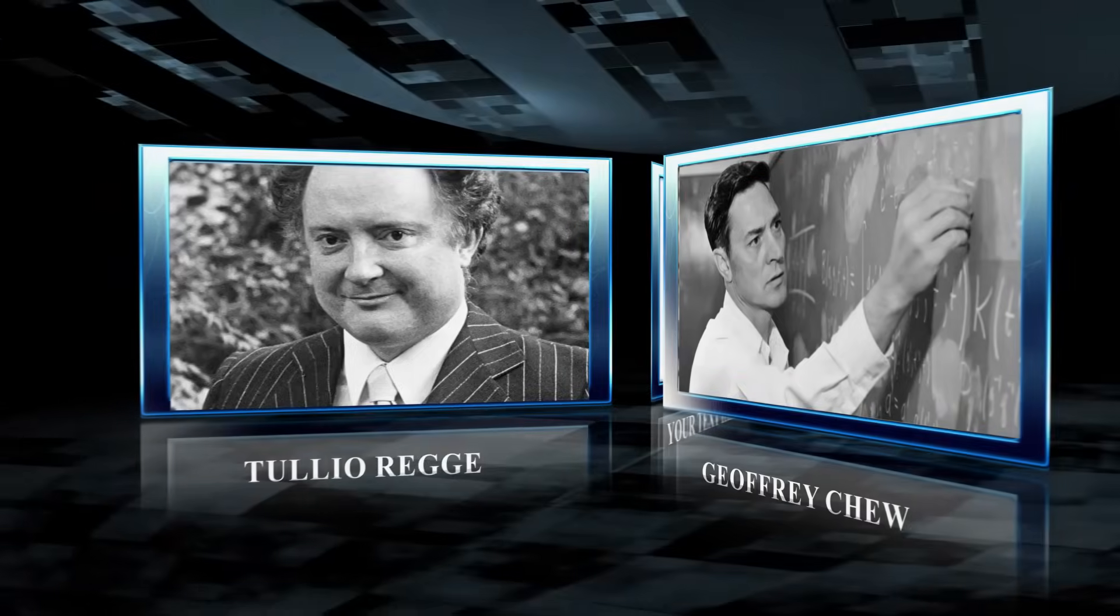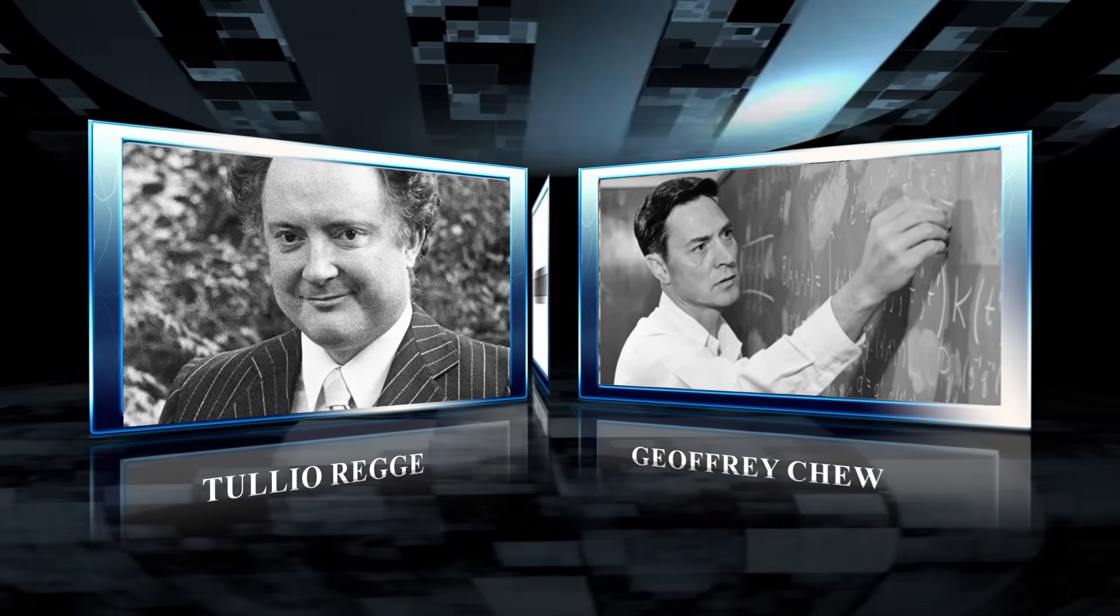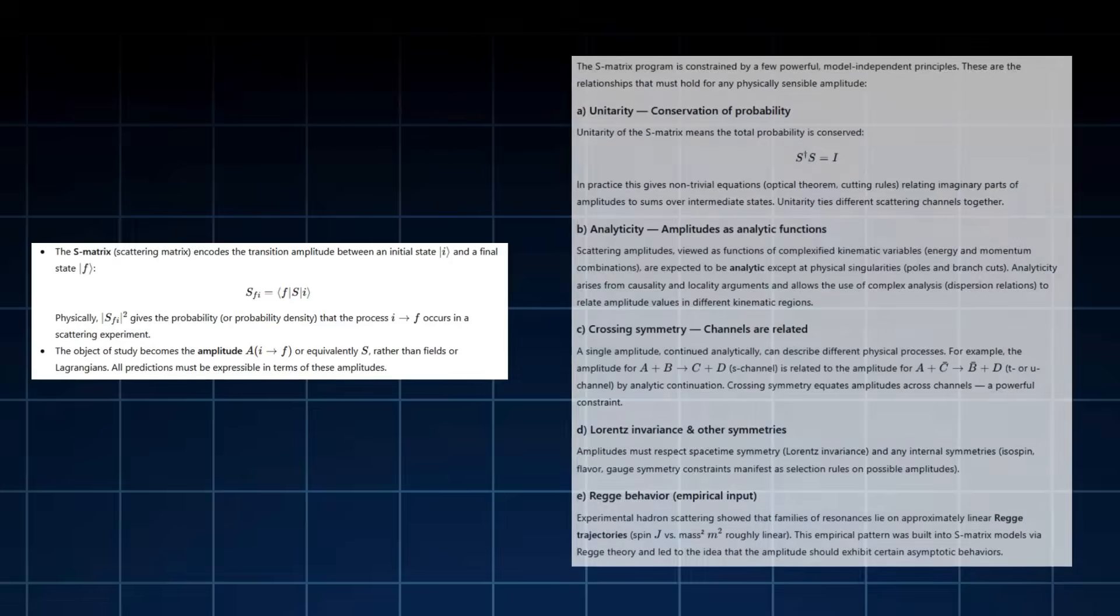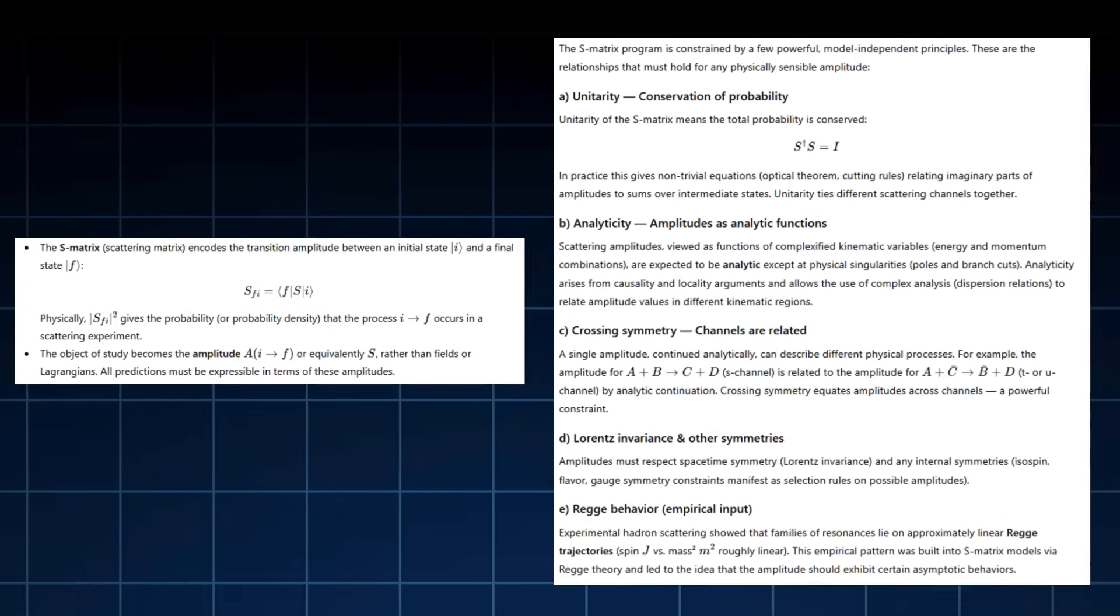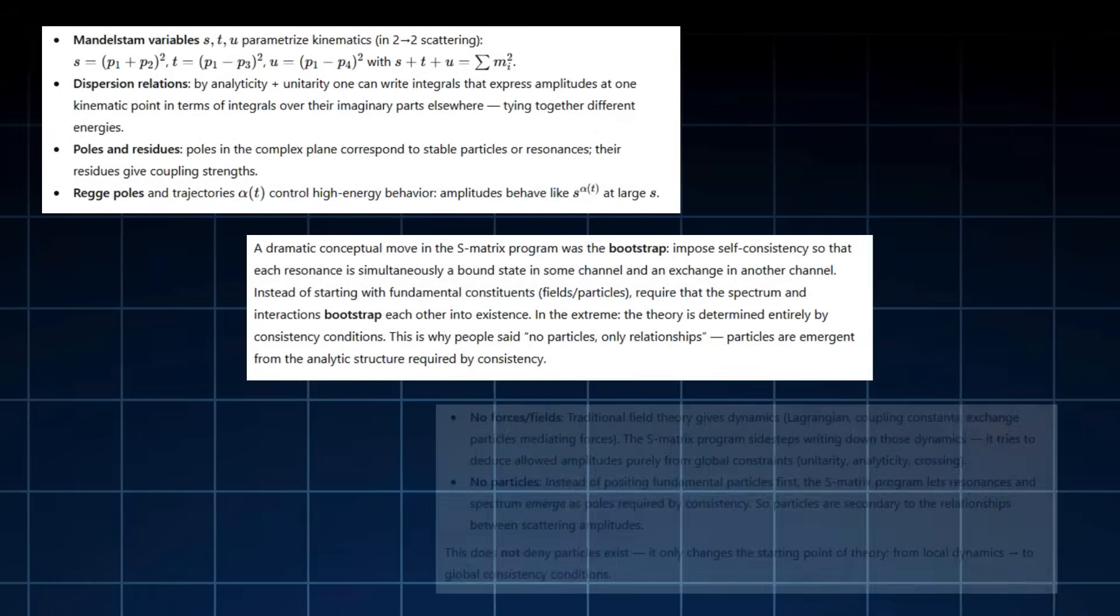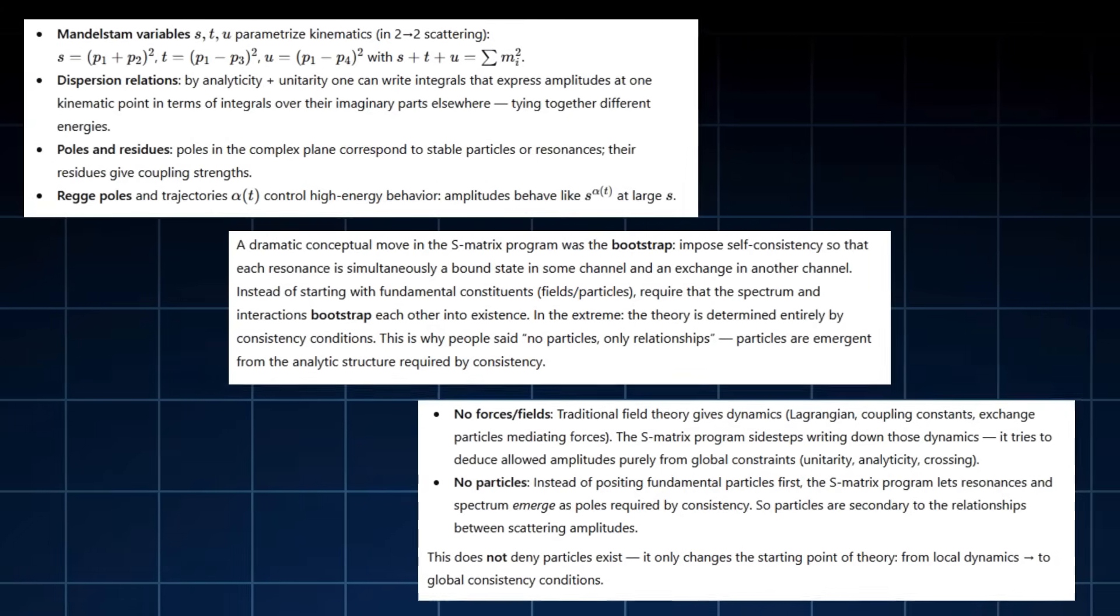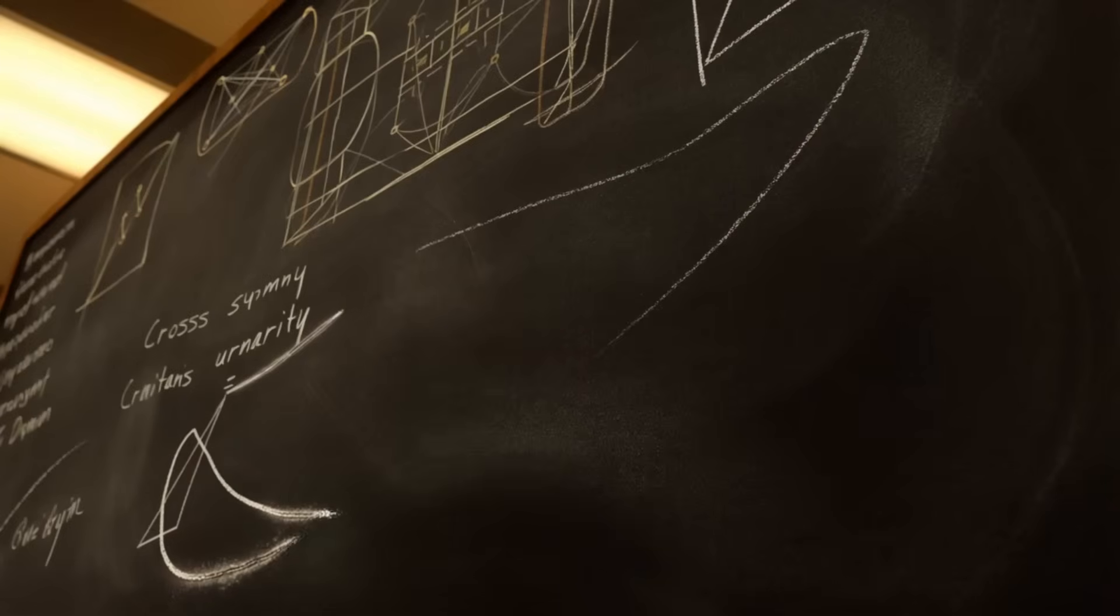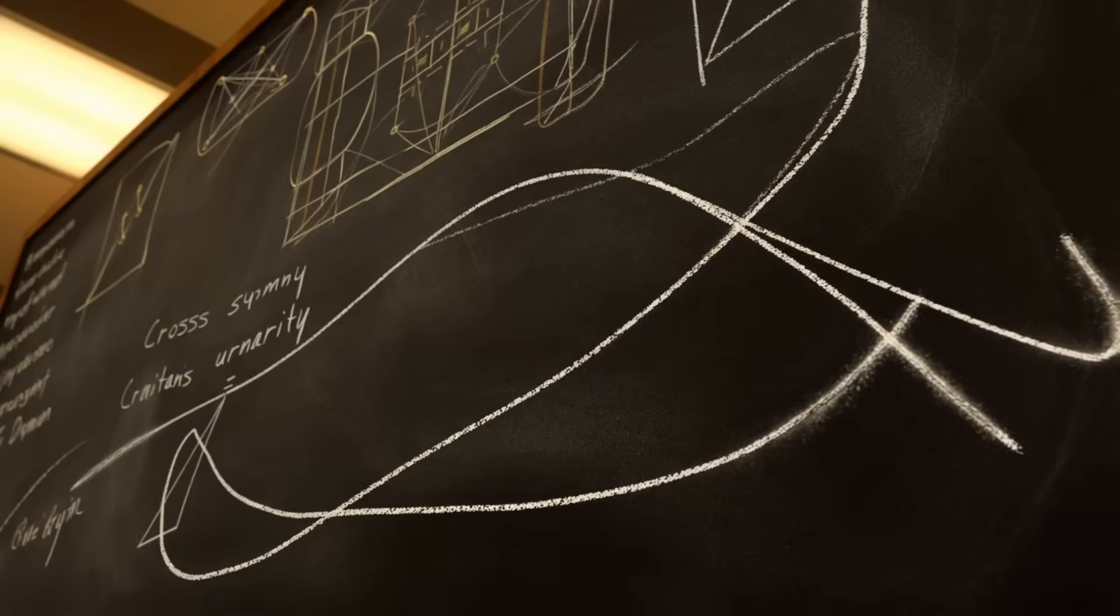Led by thinkers like Tulio Rege and Jeffrey Chu, this movement rejected the messy machinery of quantum fields. Instead, it focused on the symmetries of scattering itself. On patterns in the probabilities when particles collided. No forces. No fields. No particles. Just relationships. A physics of pure logic. It was elegant. But incomplete. The data demanded a model. Something that could capture the resonances and the symmetries all at once.